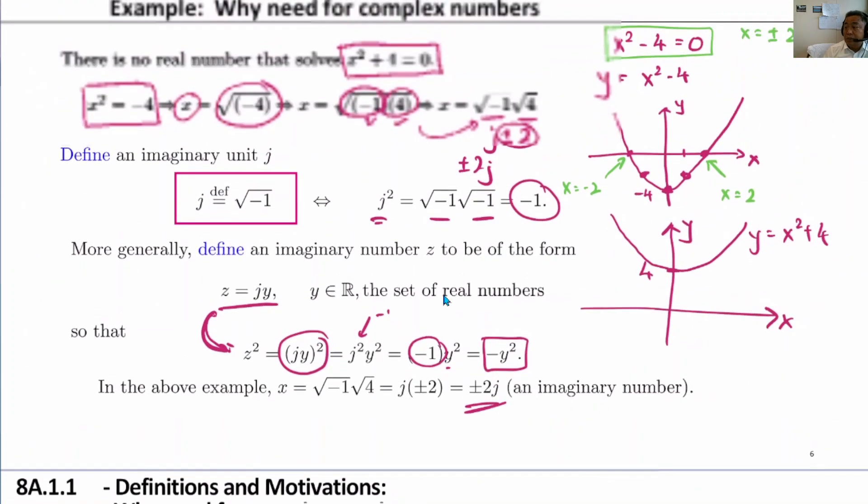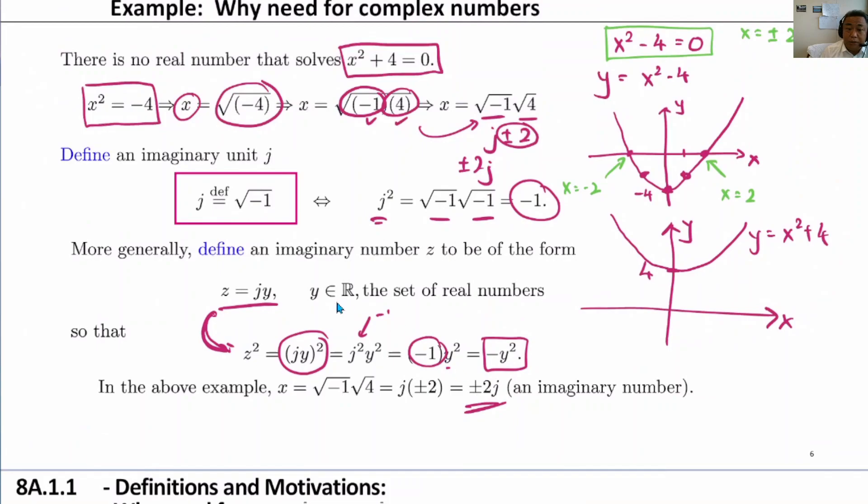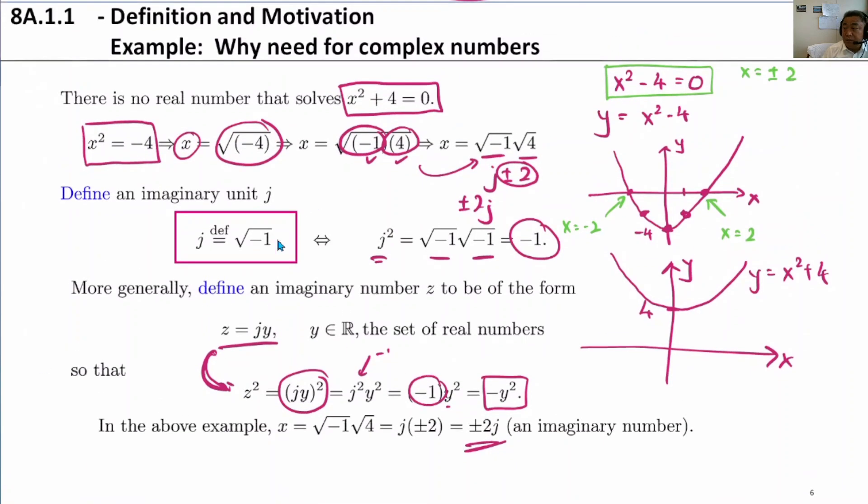Okay, so you'll learn how to do some of this manipulation later on, but this is one motivation why we need complex numbers. For polynomials, sometimes when we want to solve for the roots of the equations, we can't solve them because there is no real number that will solve this equation correctly. Thank you.